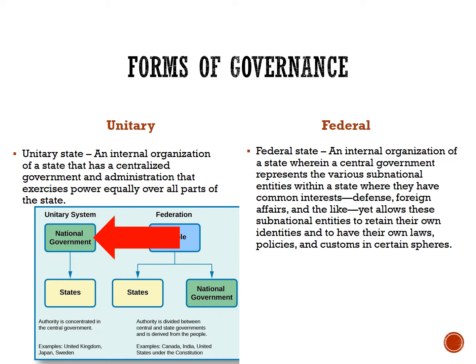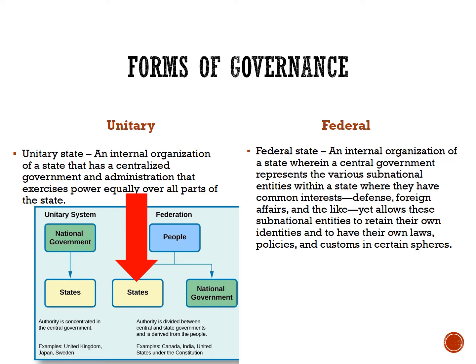In a federal system, a central government represents the various sub-national entities within a state where they have common interests — defense, foreign affairs, and the like — yet allows these sub-national entities to retain their own identity and to have their own laws, policies, and customs in certain spheres. The key is to look at the relationship between the central government and the sub-units when it comes to decision-making and power.